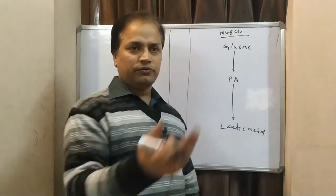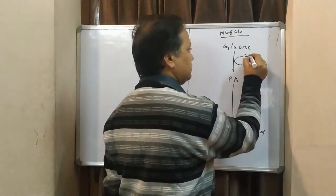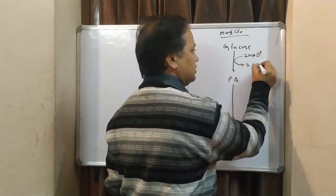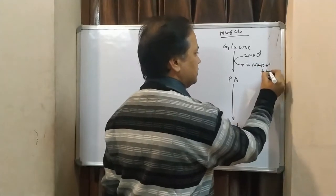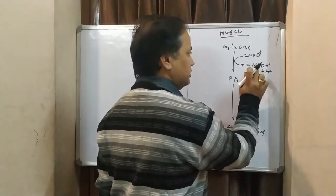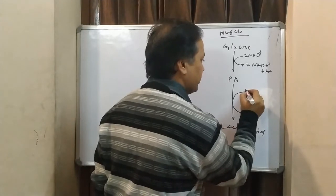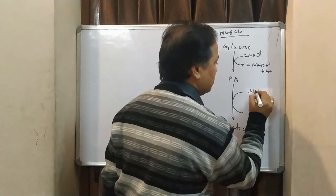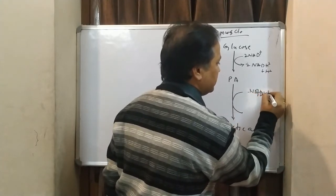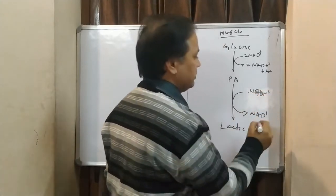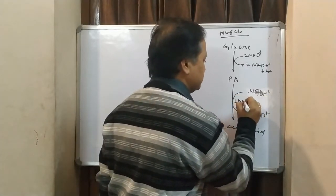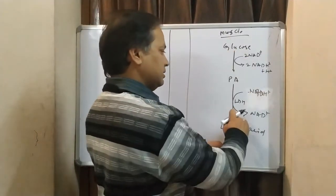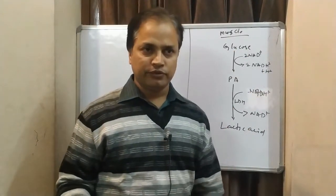Here, we will talk about 2 NAD+ what we utilize, 2 NADH what is produced plus H+. This will be used here, and it is 2 NADH and 2 NAD+ by the enzyme lactate dehydrogenase. So, this is glycolysis, this is one step extra in case of anaerobic conditions.